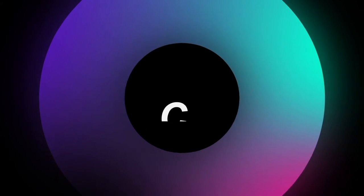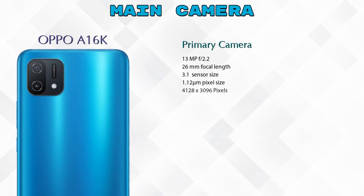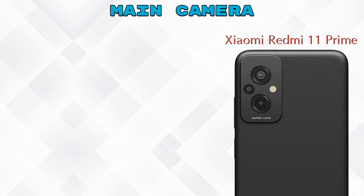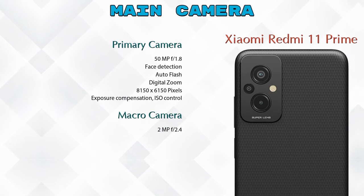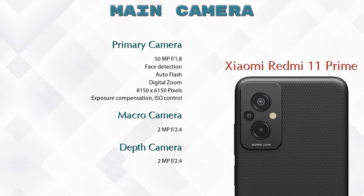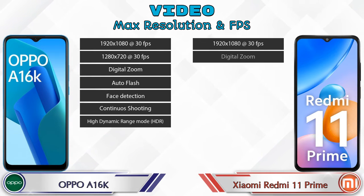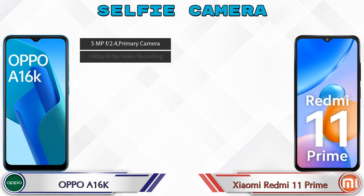Let's see the details about our favorite feature — camera. First, talking about the rear camera, the A16K has two cameras: a primary camera and an AI lens. Xiaomi Redmi 11 Prime has three cameras: a primary camera, a macro camera, and a depth camera. Talking about video, both phones have seven different types of video features available.